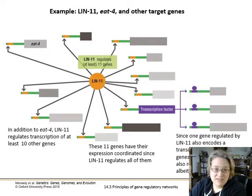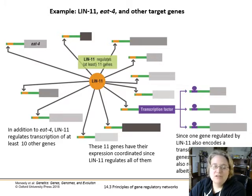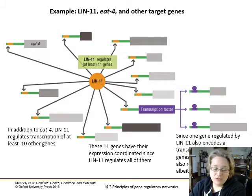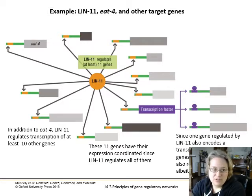LIN-11 actually regulates at least 11 other genes. These 11 genes have their expression coordinated because the same transcription factor is affecting all of them. So you get this sort of broad regulation effect of one transcription factor — LIN-11, which is coded by its own gene — affecting a bunch of different other processes along the way.